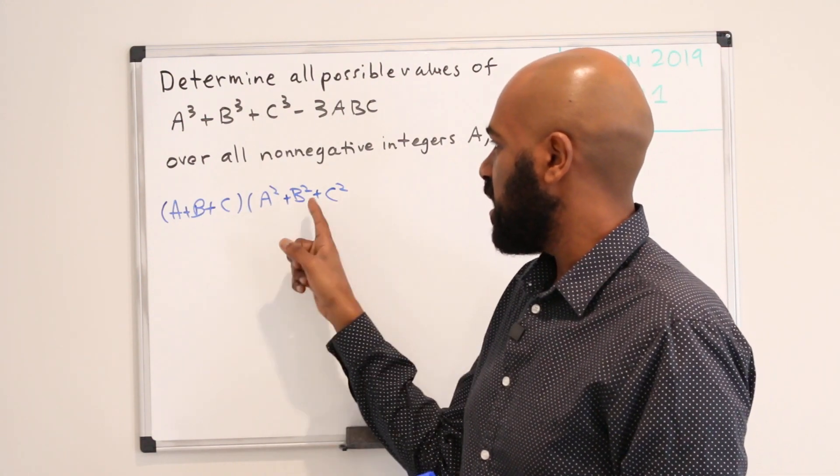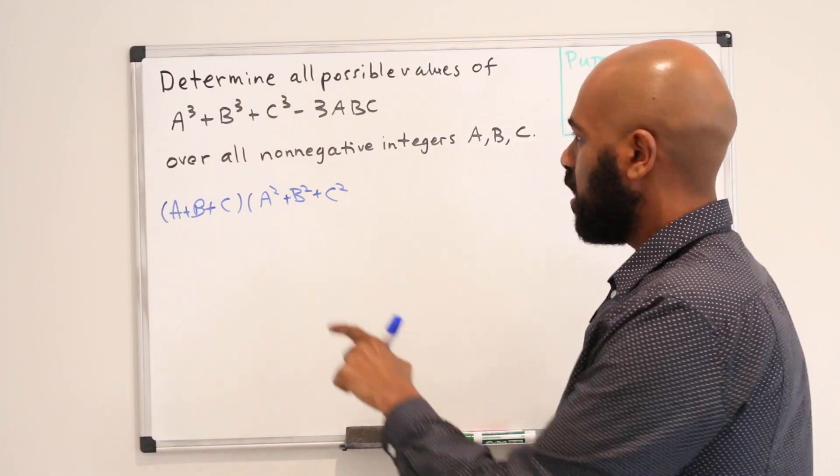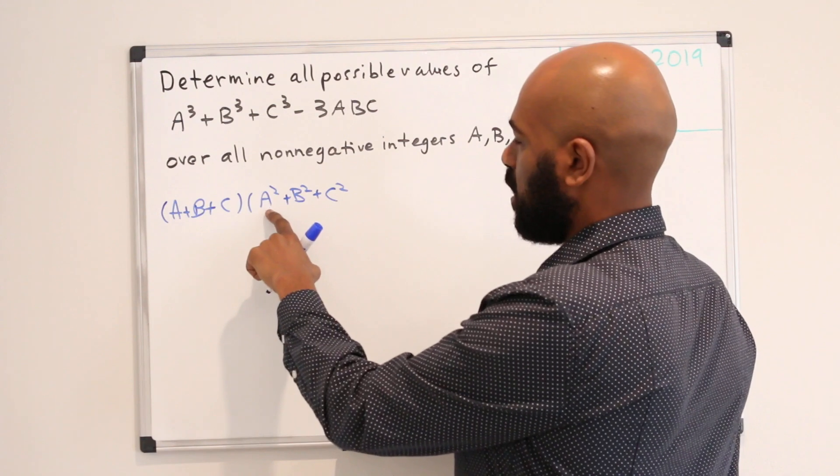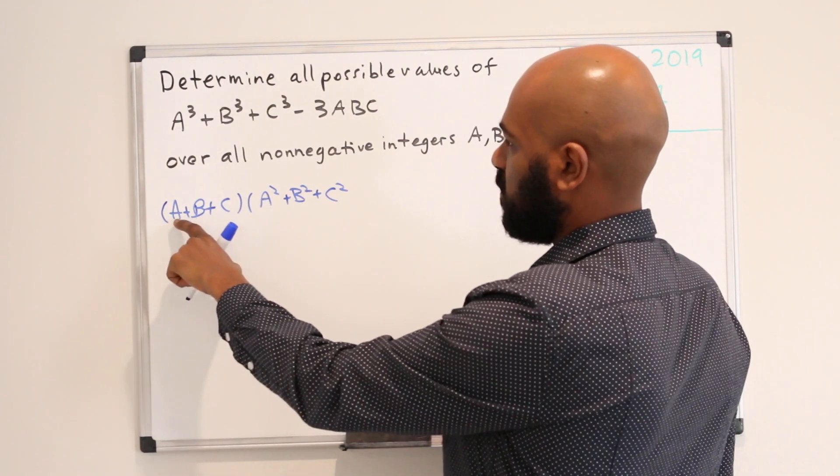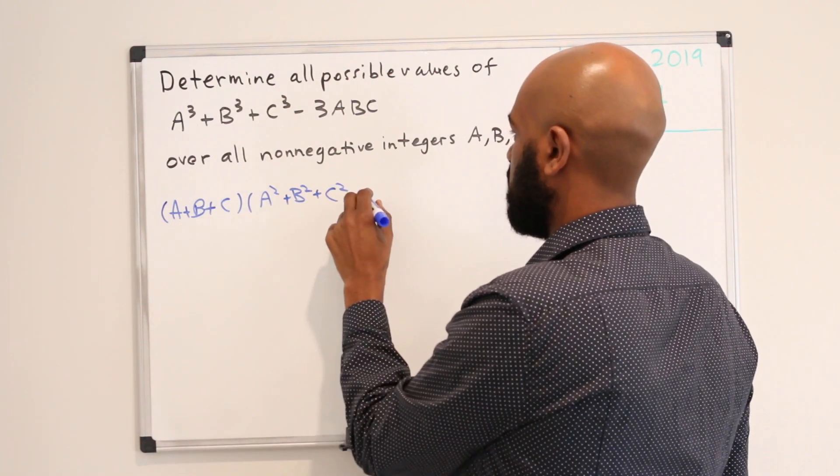You can augment this factor in order to deal with those. So for example you have A²B here and you could multiply this A by a negative AB in order to adjust for that.